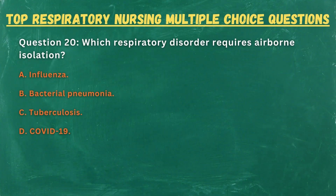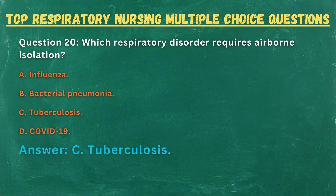Question 20. Which respiratory disorder requires airborne isolation? A. Influenza. B. Bacterial pneumonia. C. Tuberculosis. D. COVID-19. Answer: C. Tuberculosis.